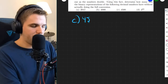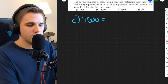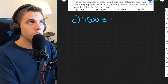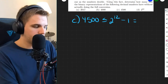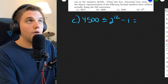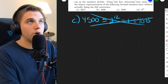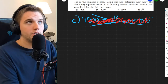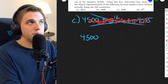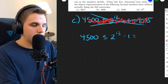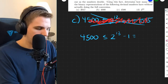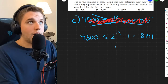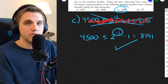Let's do part C: 4,500 — really close to 4,000, so I'm guessing the answer will be close to 12 bits. Two to the 12th minus one is 4,095, which does not work — 12 bits is not enough to represent 4,500 in base two. Let's try 13 bits: two to the 13th minus one is 8,191, and that works. So 13 bits is enough to represent 4,500 in base two.